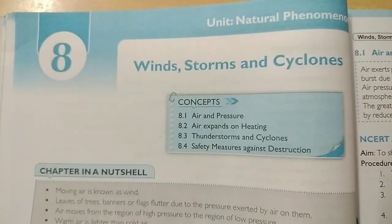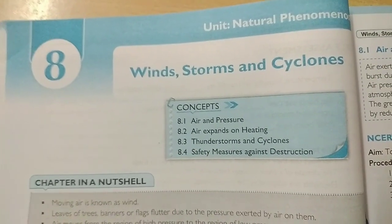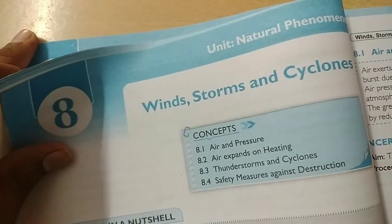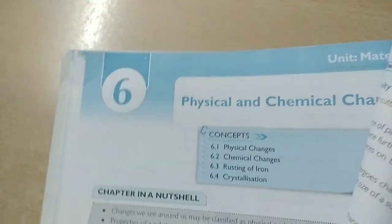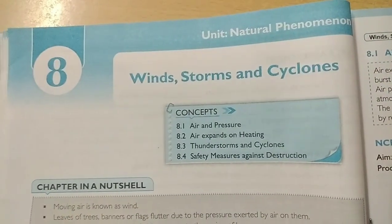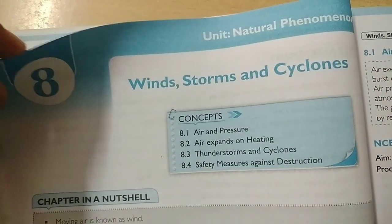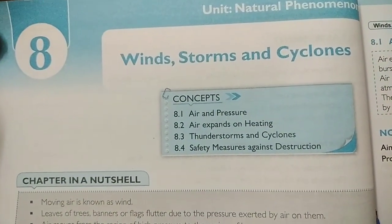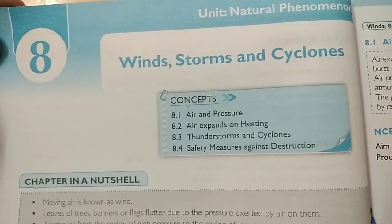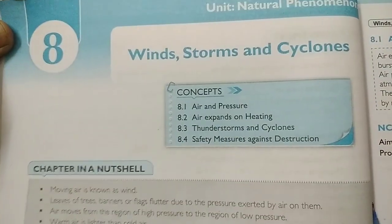Standard seven, chapter eight: Wind Storm and Cyclone. Previously we studied chapter five about acid, base and salt; chapter six about physical and chemical changes; and chapter seven about weather. In chapter eight we will study: first, heat and air pressure; second, air expands on heating; and third, thunderstorm and cyclone, and safety against their destruction.